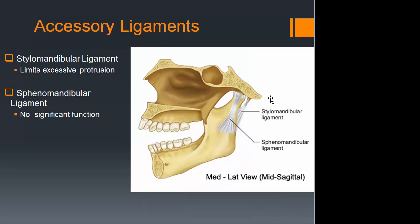Now, accessory ligaments. There is a large error in Gray's Anatomy on this topic. The key accessory ligament is the stylomandibular ligament, which runs from the styloid process to the mandible. The other is the sphenomandibular ligament, which inserts into the lingula and has no limiting function we're concerned with. It's the stylomandibular ligament that almost single-handedly limits excessive protrusion — sticking the jaw out like a bulldog. Pulling it back is retrusion.